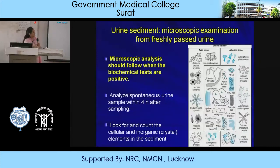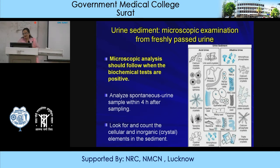Different urine sediments can be seen in the diagram. Crystals in acidic urine include calcium oxalate crystals, uric acid crystals, leucine spheres, sodium urate crystals, tyrosine needles, cysteine crystals, and amorphous urates. In alkaline urine you have amorphous phosphates, calcium carbonate crystals, ammonium urate crystals, calcium phosphate crystals, and triple phosphate crystals.